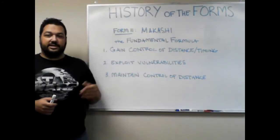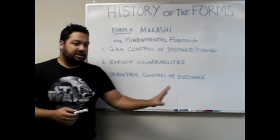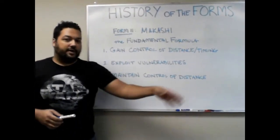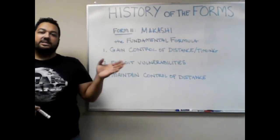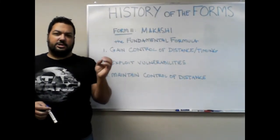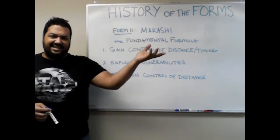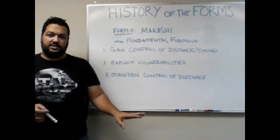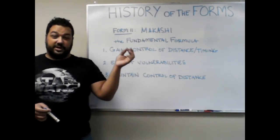And that's where the next part comes in: exploit vulnerabilities. As the Makashiist is doing this dance of the duelist with his opponent — measuring out the distance, avoiding attacks, probing and trying to find weaknesses, offering up feints and fakes — what he's looking for is a vulnerability he can exploit and turn to his advantage. Whether it's the opponent's footwork, their blade work, or their tactics, they're looking in all three of those contention areas to find a vulnerability, a weakness, a crack in the armor to exploit.